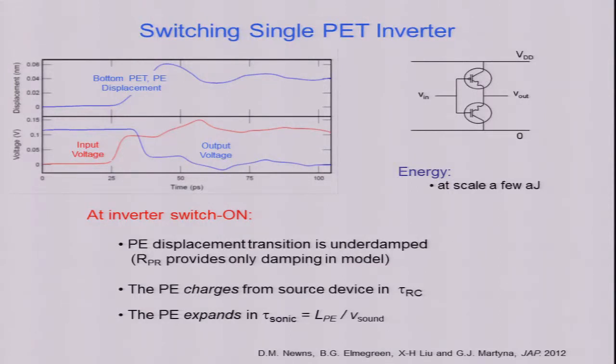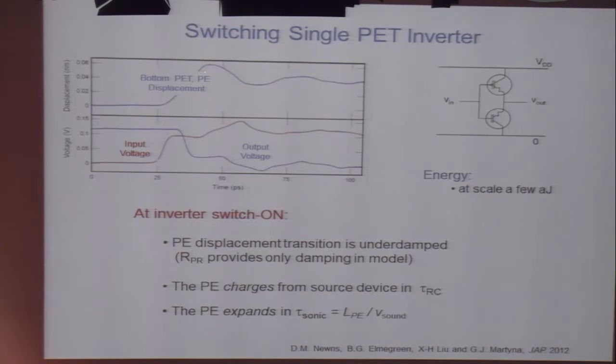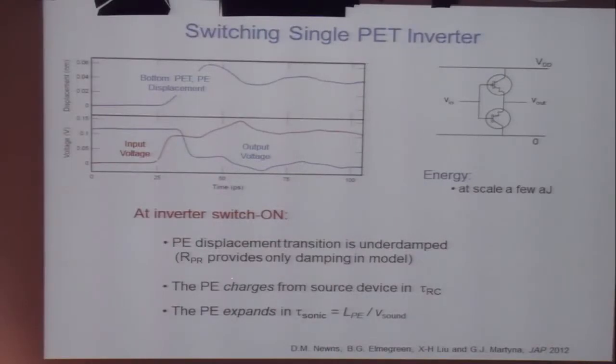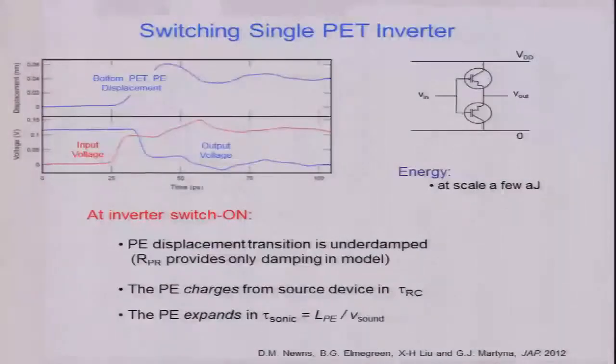If you set up the model and describe an inverter, you see here input voltage, output voltage, there's the displacement of the piezoelectric. The first thing that you notice is it's underdamped. Where this type of system differs from CMOS is the piezoelectric is underdamped, and the damping comes from the electrical resistance in the circuit. The piezoelectric gate charges from the driving device in RC time-constant time. When the RC time-constant time is short, then the characteristic time of the device is the sound propagation time through the piezoelectric, which is a few picoseconds.